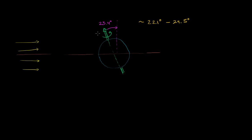Just to make it clear, it's not wobbling dramatically — the difference between 22.1 and 24.5 is not huge. So 23.4 degrees is our current value; maybe 22.1 would look something like this and 24.5 would look something like that. It's not a huge difference, but we believe it is enough to have a significant impact on the climate and seasons — especially in terms of how much chance different parts of our planet have to freeze over, or how much sunlight they get.